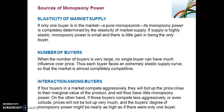Lastly, the interaction amongst buyers matters. For example, if there are four buyers in a market and they compete very aggressively, they will bid up the prices close to the marginal value of the product. In doing so, the difference between the price and the marginal value is not that great, and hence they have little monopsony power. But if those buyers compete less aggressively or even collude, then prices won't be bid up very much, and the buyers' degree of monopsony power might be nearly as high as if there were a pure monopsonist — just one buyer.